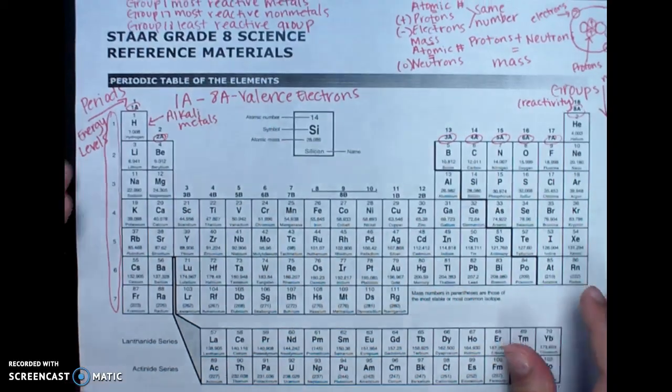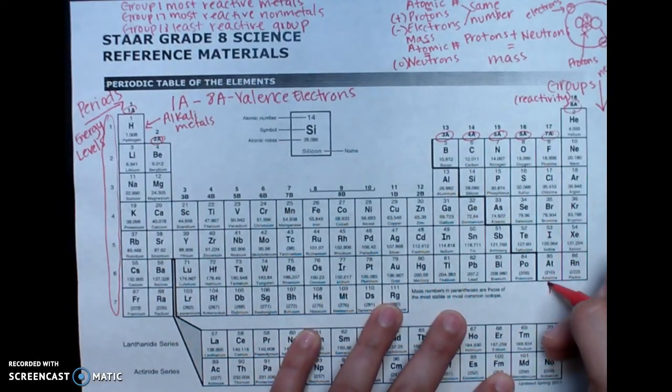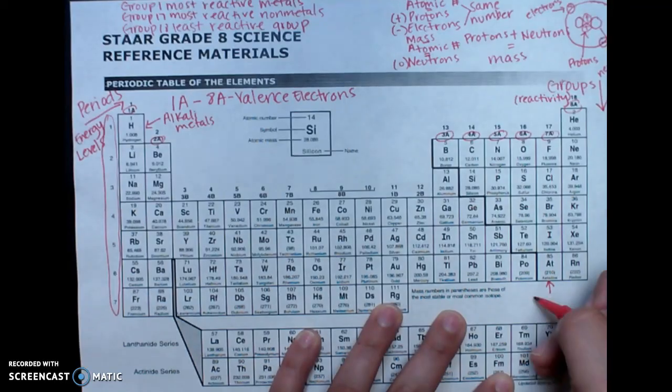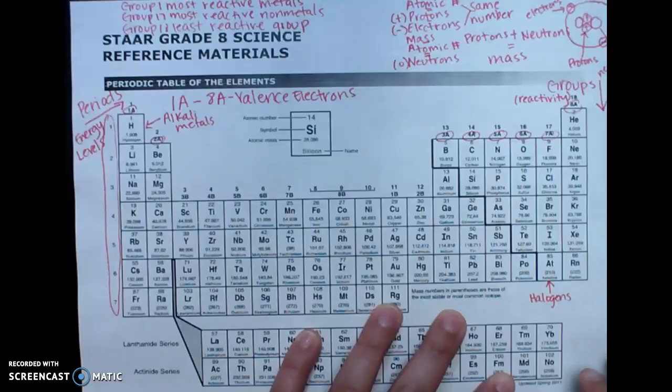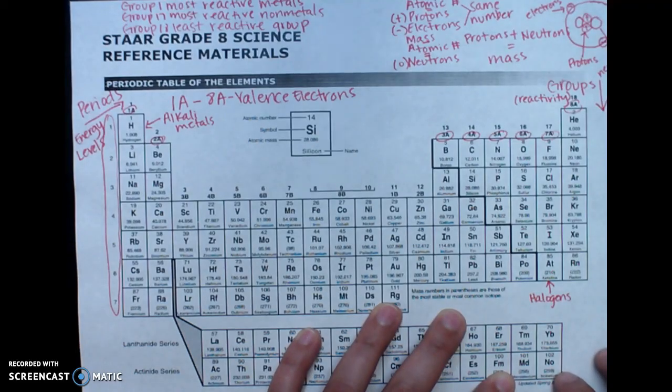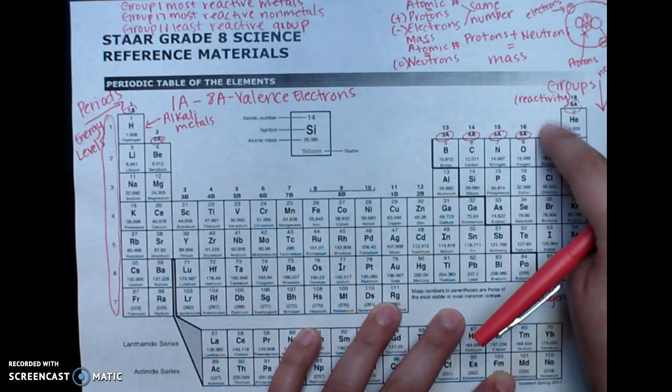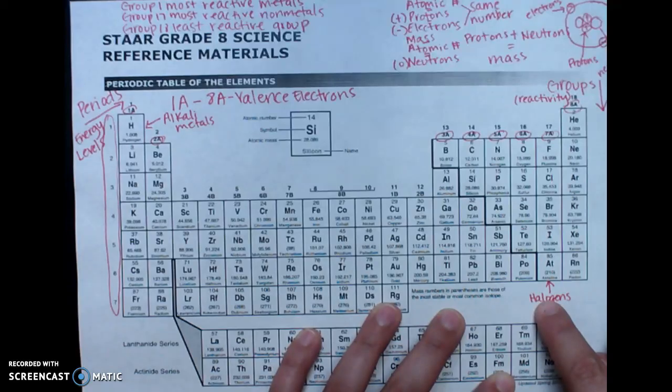The second group I want you to locate is group 17, which is right here. And these are our halogens. Okay? And the reason why they're so reactive is because they have seven valence electrons, and they want one more.